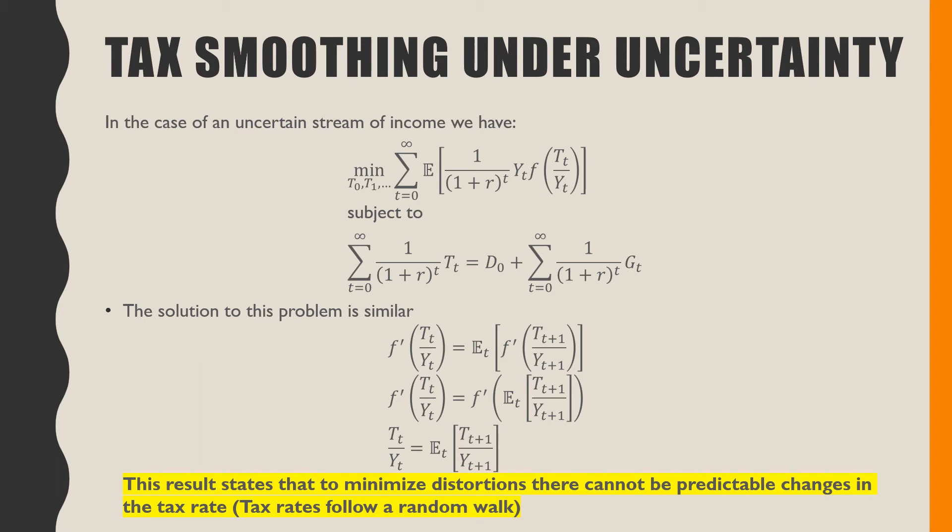Tt/Yt, which is our tax share of output at time t, is going to be equal to the expected tax share of output at time t plus one based on time t's current information. This is a certainty equivalence type of idea.